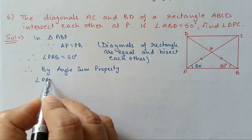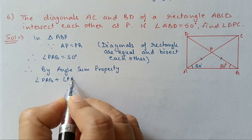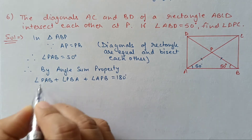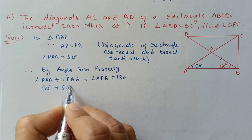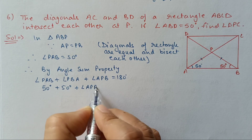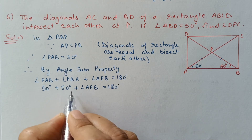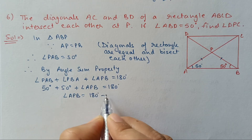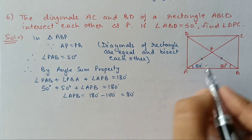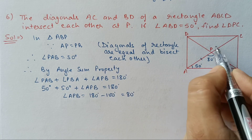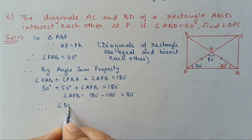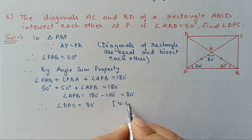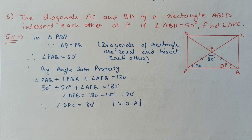By angle sum property: angle PAB plus angle PBA plus angle APB equals 180 degrees. That is 50 plus 50 plus angle APB equals 180, so angle APB equals 80 degrees. We need angle DPC, which equals 80 degrees because angles DPC and APB are vertically opposite angles.